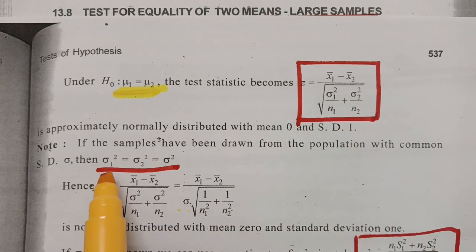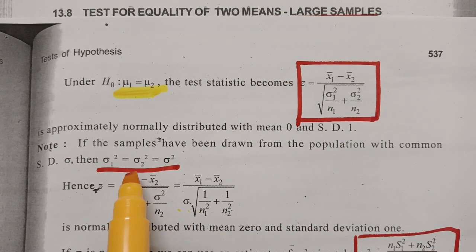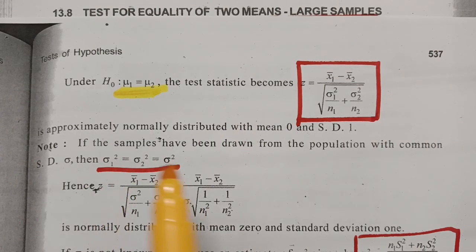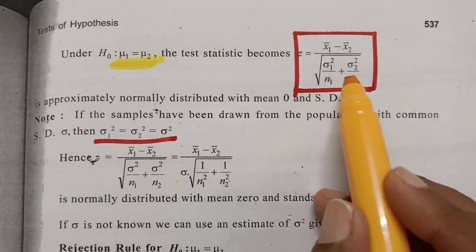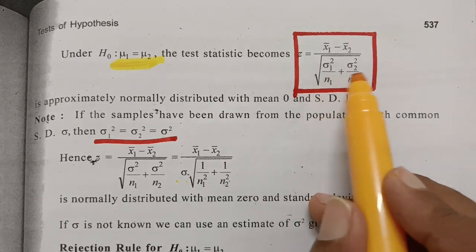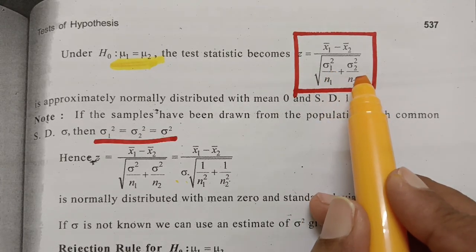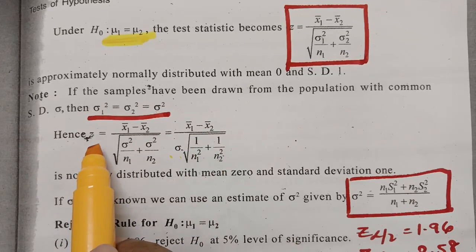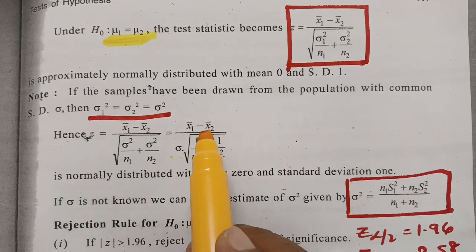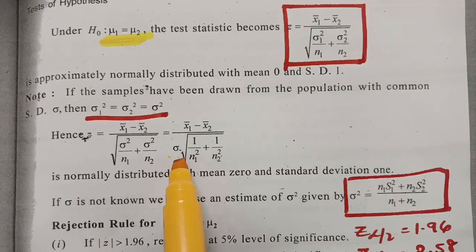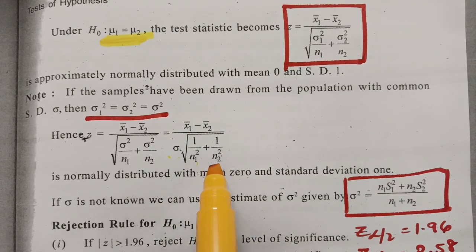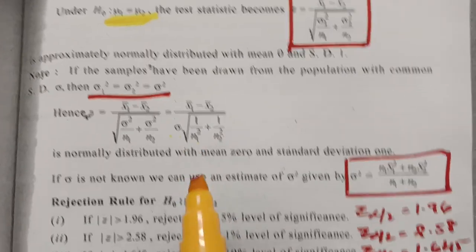In the special case where sigma1 squared equals sigma2 squared equals sigma, replace sigma1 and sigma2 by sigma and take sigma common. Then the test statistic Z becomes X1 bar minus X2 bar divided by sigma times the square root of (1/N1 plus 1/N2).